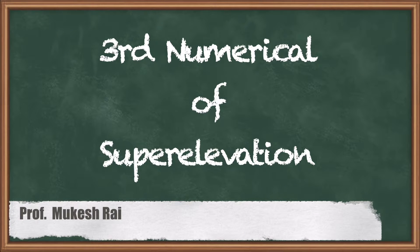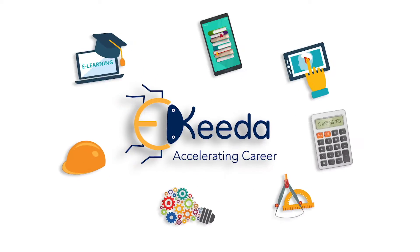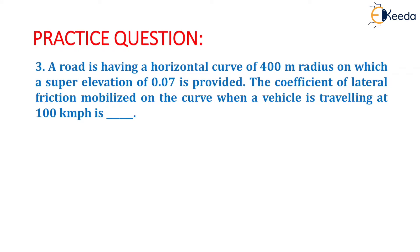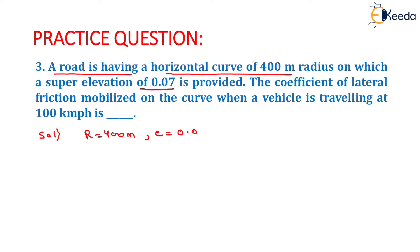Hello students, today we are going to solve the 3rd numerical of super elevation. A road is having a horizontal curve of 400 meter radius on which a super elevation of 0.07 is provided. So in this question, radius R is equals to 400 meter and super elevation E is equals to 0.07.